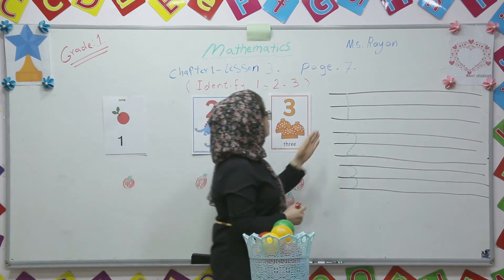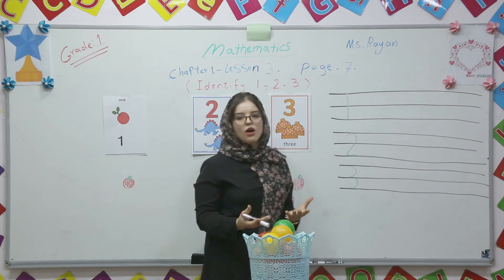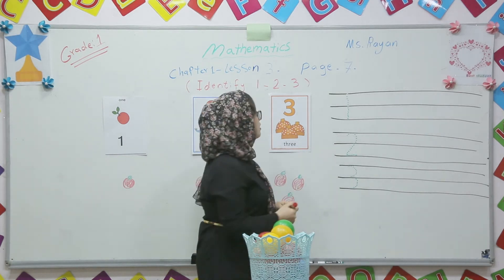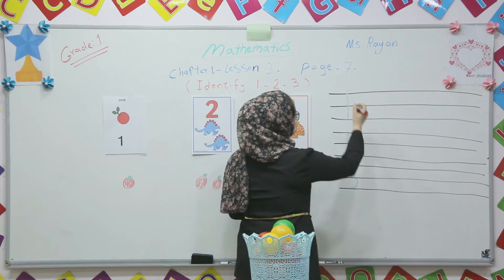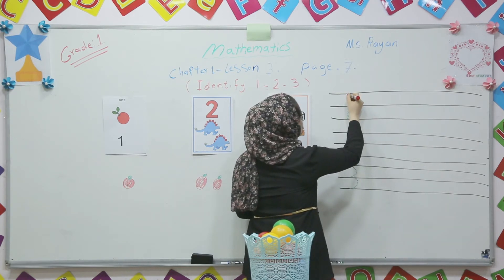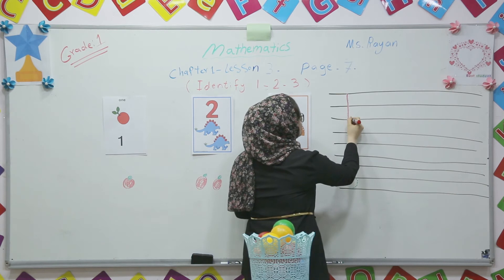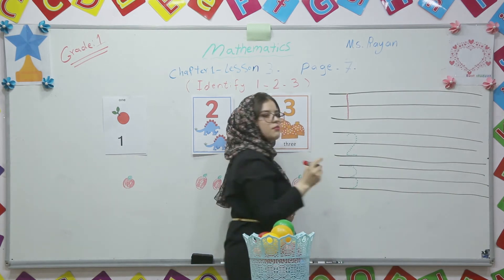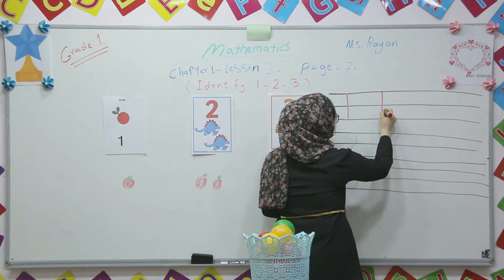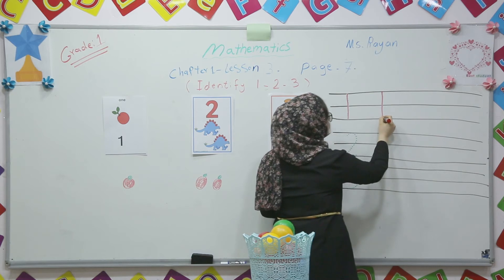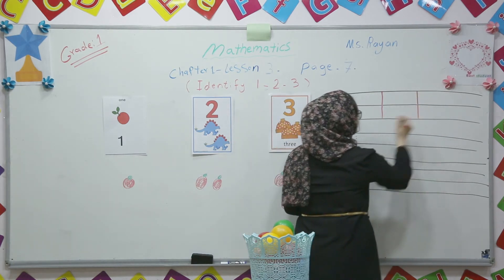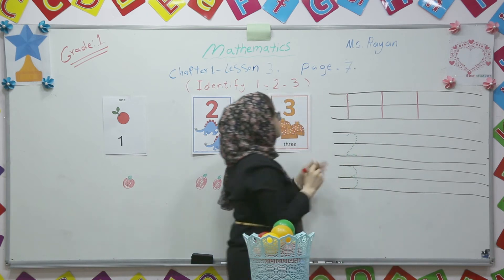Now, here, how to write — how to write number 1, 2, and 3. We have good tracing here. So how to write number 1: one line down. See? This is number 1. Again, another 1 — only one straight line down. Number 1. See? This is number 1.